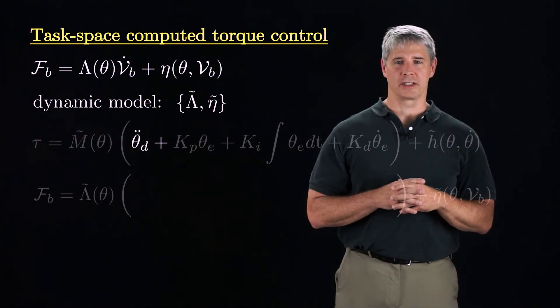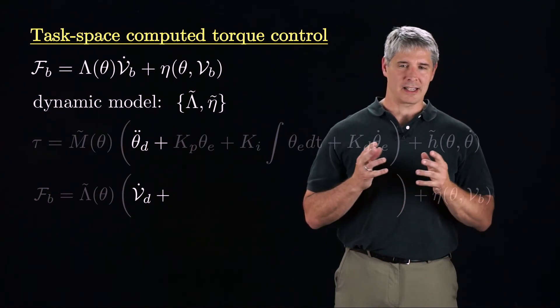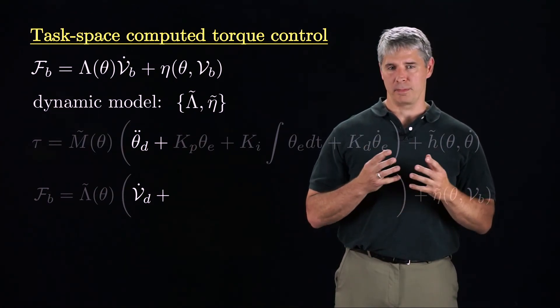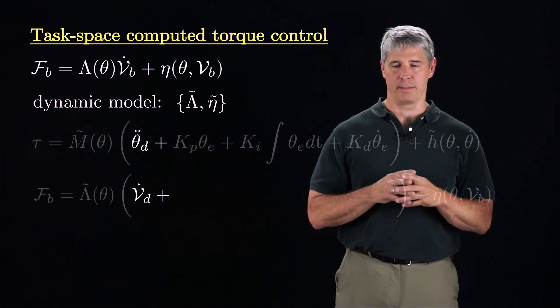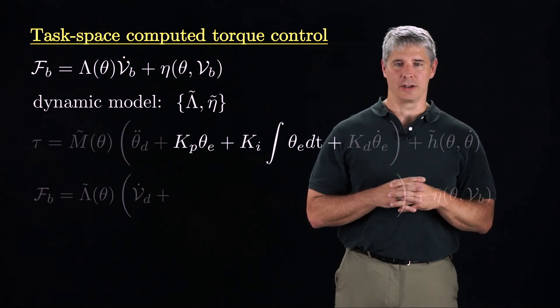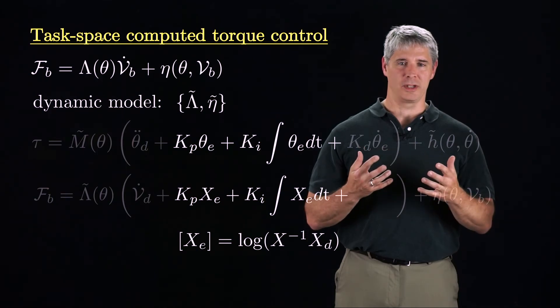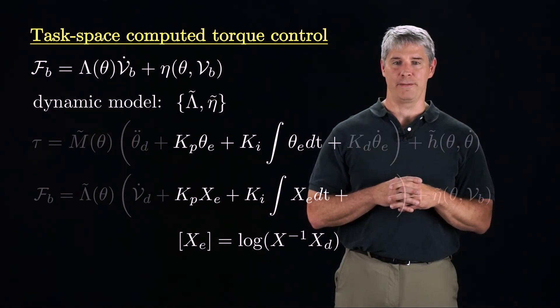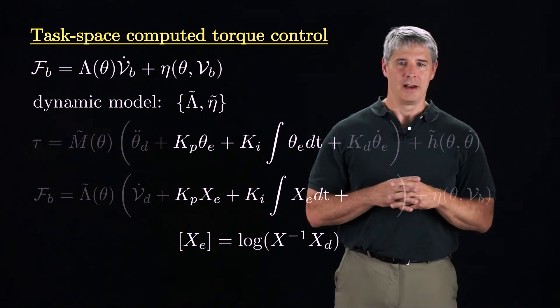The analog to the feedforward acceleration theta d double dot is the time derivative of the desired twist, VD dot. Technically, this feedforward acceleration should be expressed in the current end-effector frame, but let's ignore that detail. The analogy to the PI terms replaces theta E by the twist XE that takes the current end-effector frame to the desired end-effector frame in unit time.